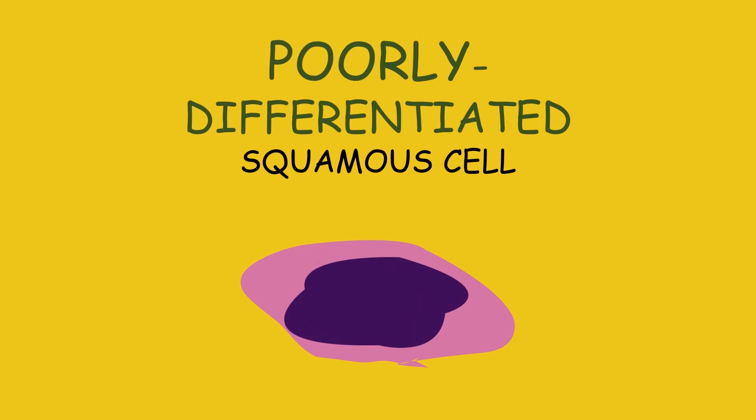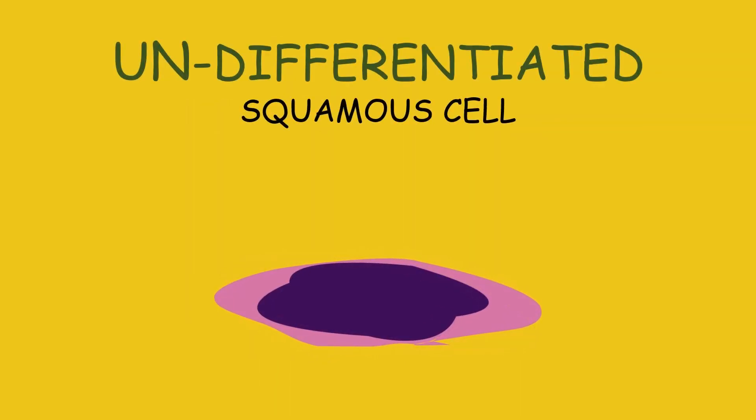Poorly differentiated squamous cell has lost quite a lot of its resemblance from the normal squamous cell. Lastly, an undifferentiated squamous cell has no resemblance to the mature cell and may look more like the stem cell.